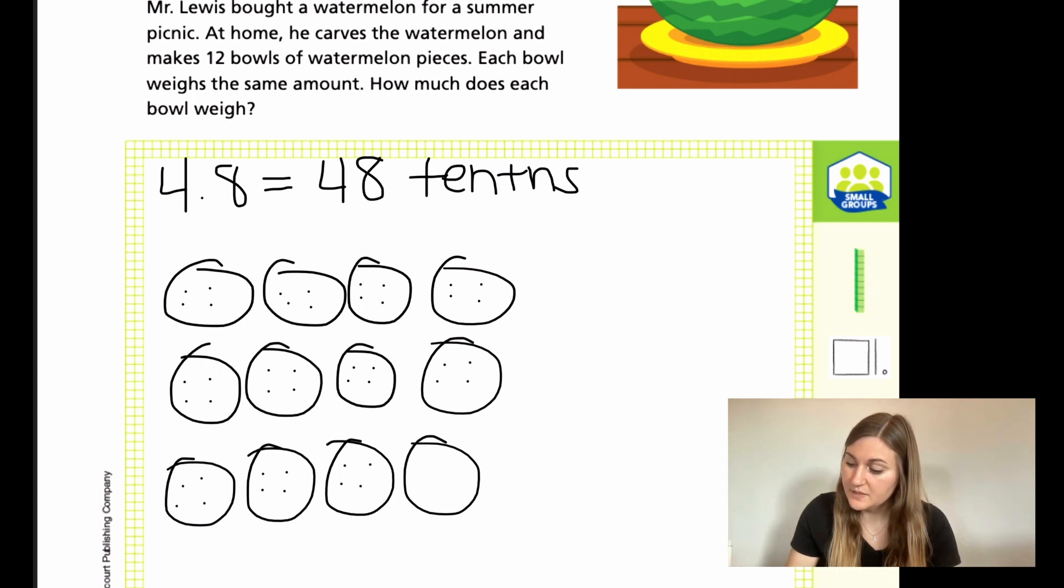So this would be equaling 48 total dots, 4 in each bowl. So what does that mean for our total problem? It means how much does each bowl weigh? Well, if I gave each bowl 1 tenth, because I had 48 tenths to separate out, if I gave each one 4 of the tenths, that means that each bowl is going to weigh 0.4 in the unit that we're using as pounds. So 0.4 pounds.